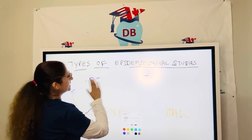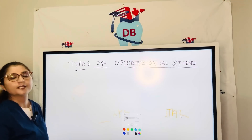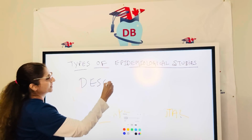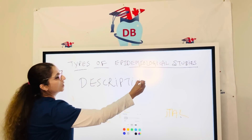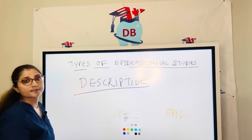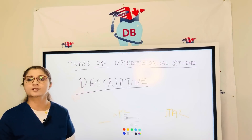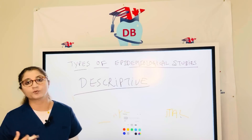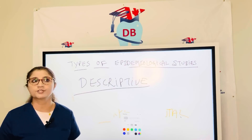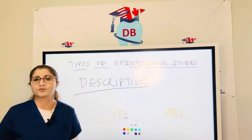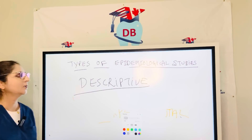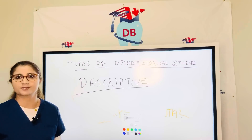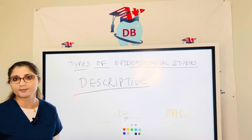Descriptive studies are basically describing the disease — that's why they are called descriptive studies. They are about the quantification of the disease. But when I do a descriptive study, I'm not bothered about the etiology of the disease — why this disease happened in this population — nor am I going to track the progress of the disease. It's only about knowing the quantity: how many patients are suffering from this disease in this population.